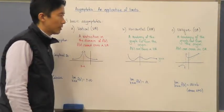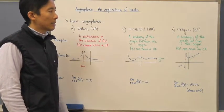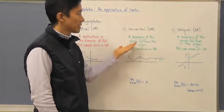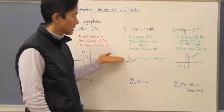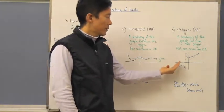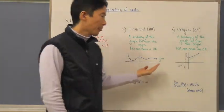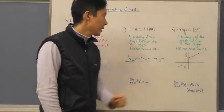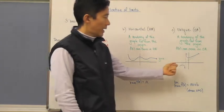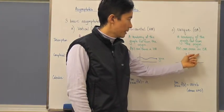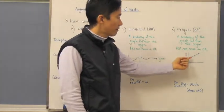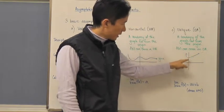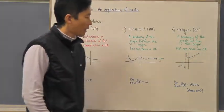The last type is the oblique asymptote. An oblique asymptote is again a tendency, but unlike a horizontal asymptote — where the tendency is toward a particular value — an oblique asymptote is a tendency toward a non-horizontal line. As x goes very far from the origin, the function approaches closer and closer to this dotted line.